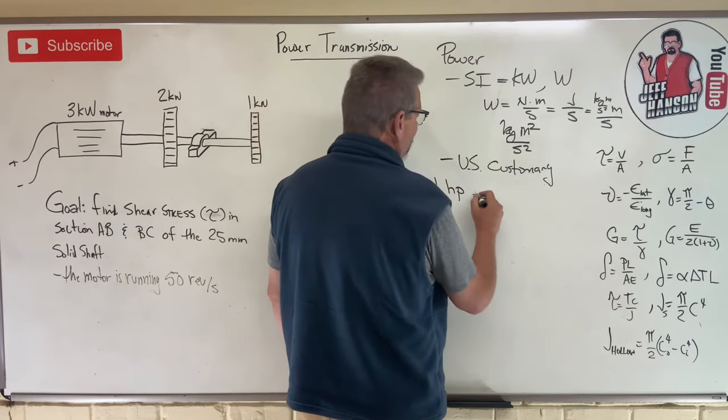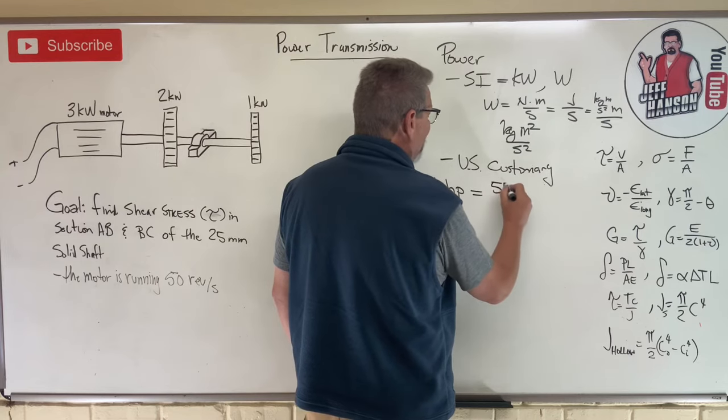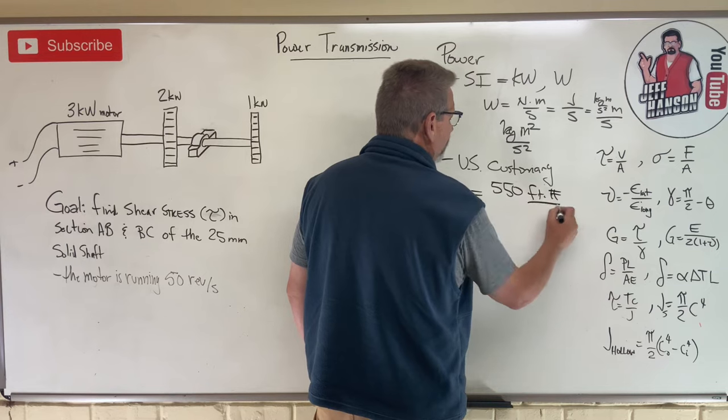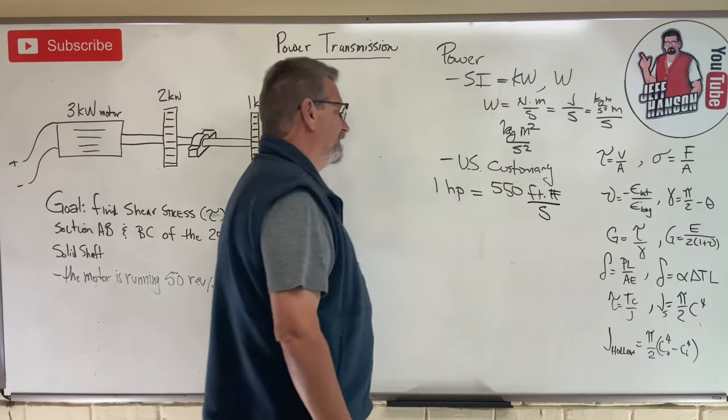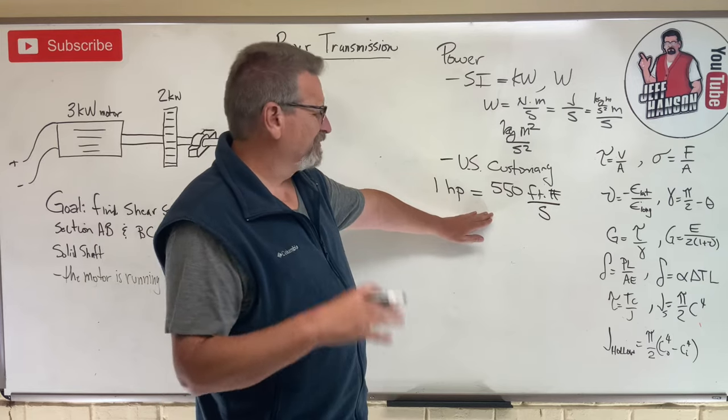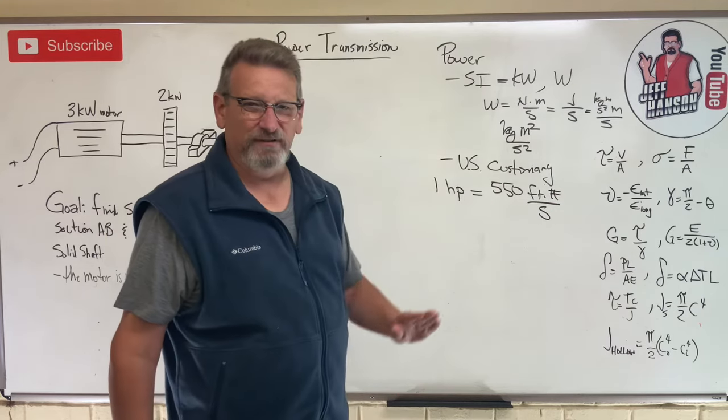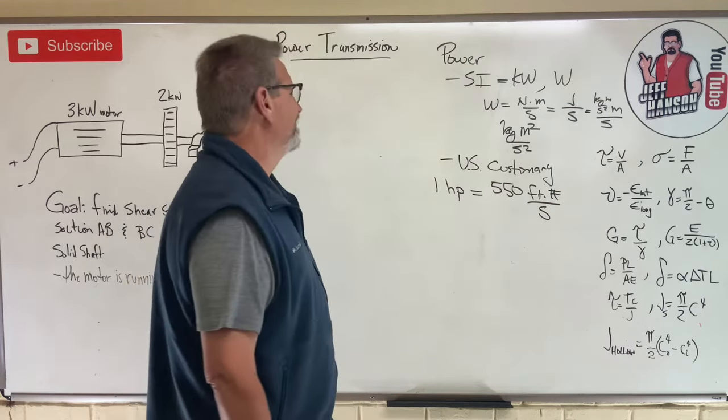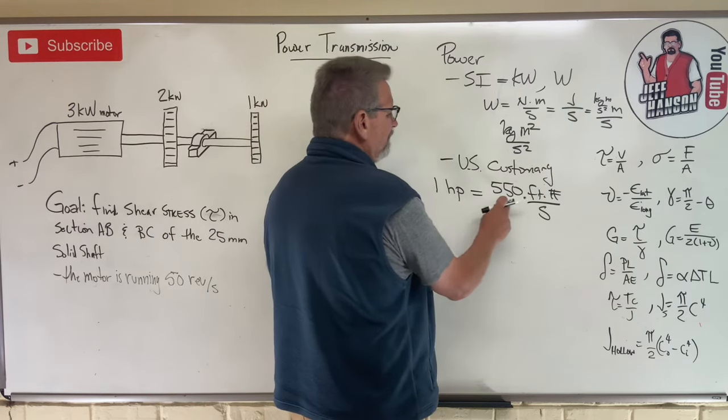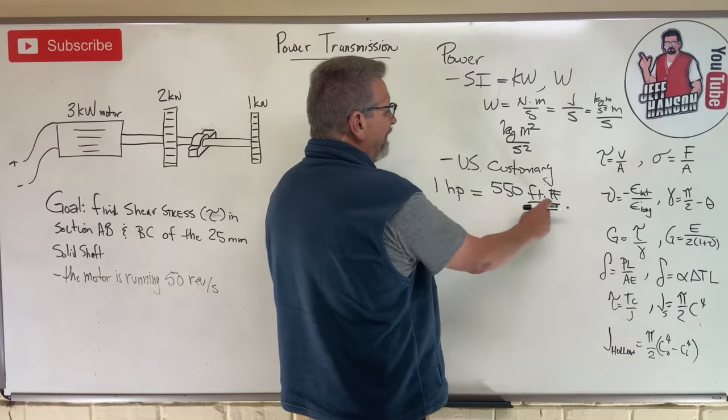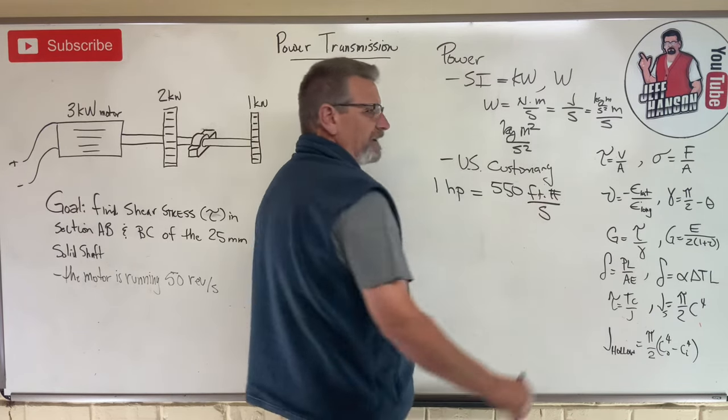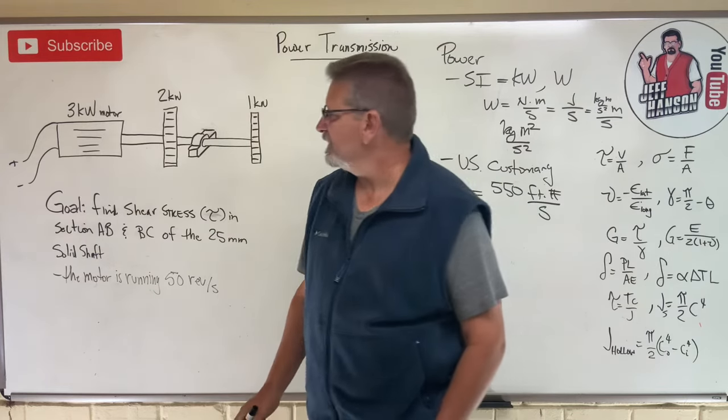Over the years, a horsepower has become 550 foot pounds per second. Forget about dividing stuff by 10, Mr. Metric Unit. We're going to divide by 550. So you're going to see horsepower given and know that it's foot pounds per second - work divided by time.